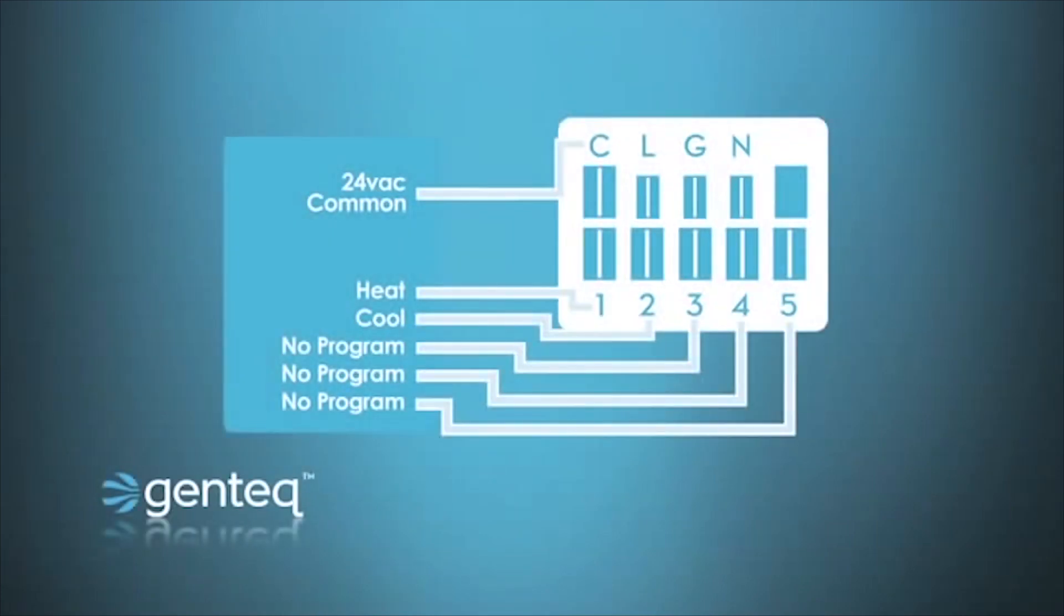So let's look at an example of a package system using X13. This happens to be a gas and AC package system. And we notice that there is a heat and a cool tap sending voltage to the motor.